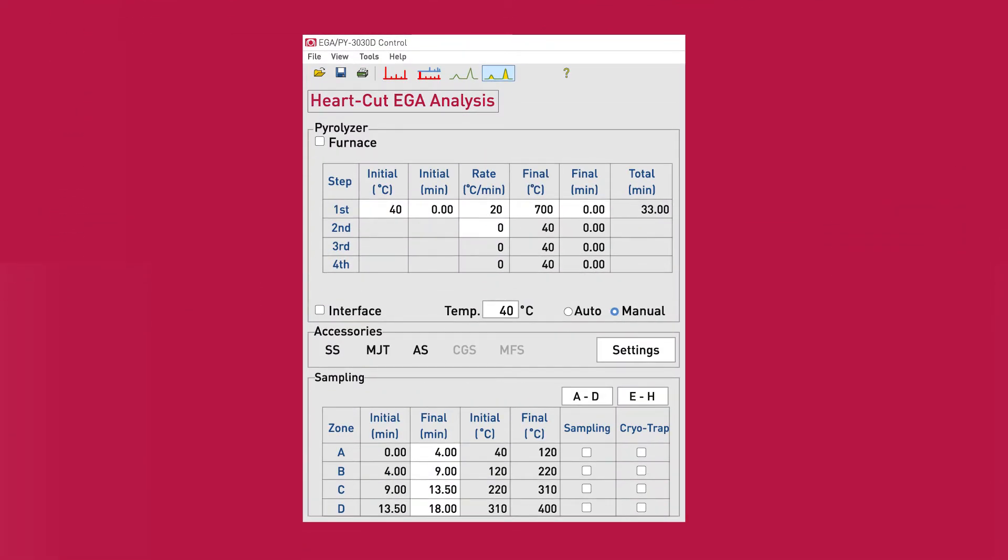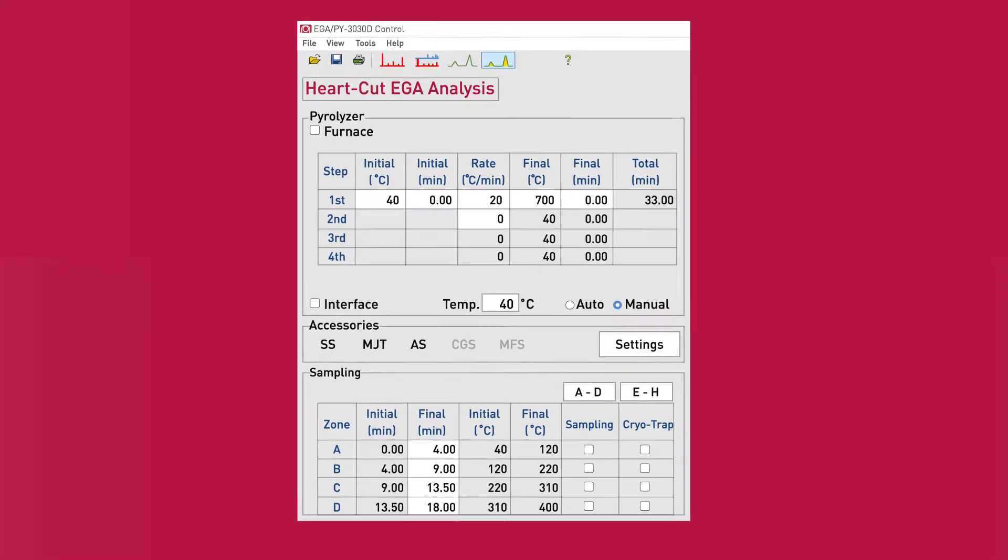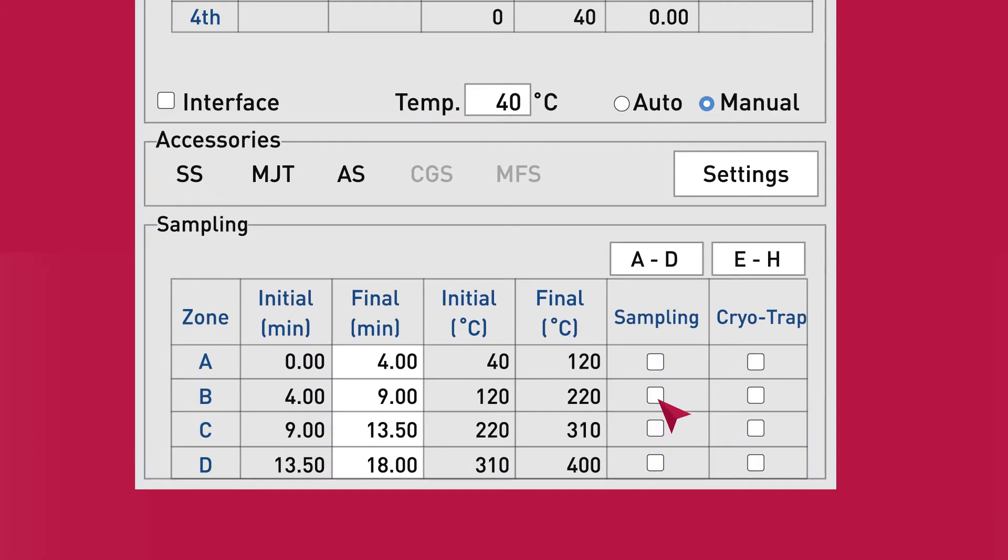To simplify the complexity of eyeliner characterization, you can program your microfurnace into multiple temperature zones and obtain separate GCMS chromatograms for each thermal zone. You can also selectively choose not to analyze any specific temperature zone.